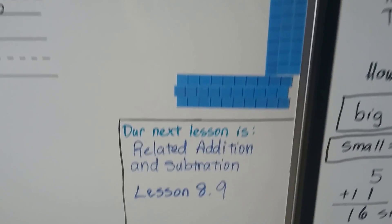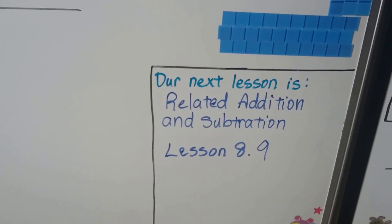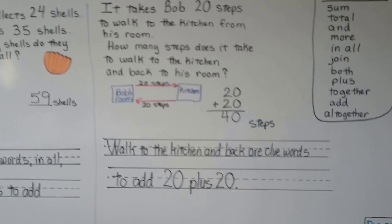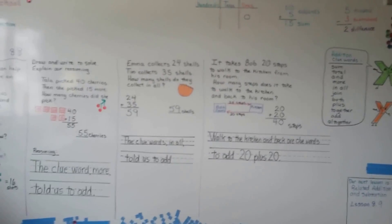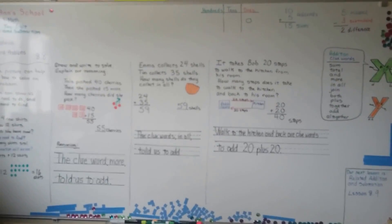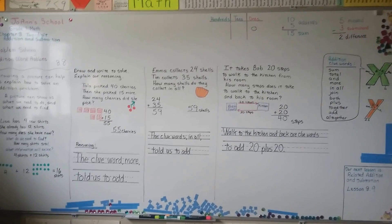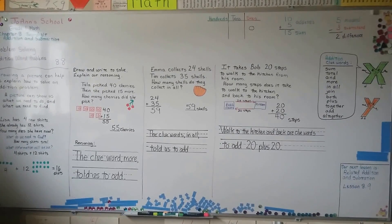Our next lesson is related addition and subtraction for two-digit numbers. That's lesson eight point nine. We only have a couple more lessons to go and we're finished with chapter eight, and we're going to learn about measurement in chapter nine. That's coming up very soon. I hope you're having a great day, and I'll see you next time. Bye.